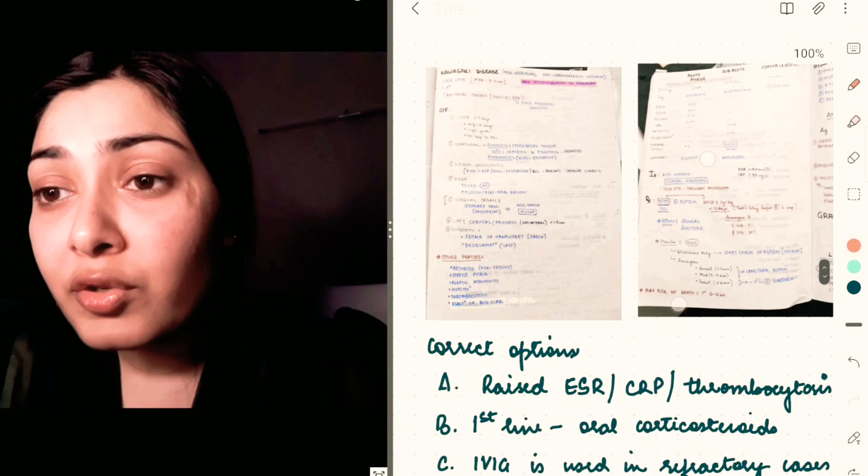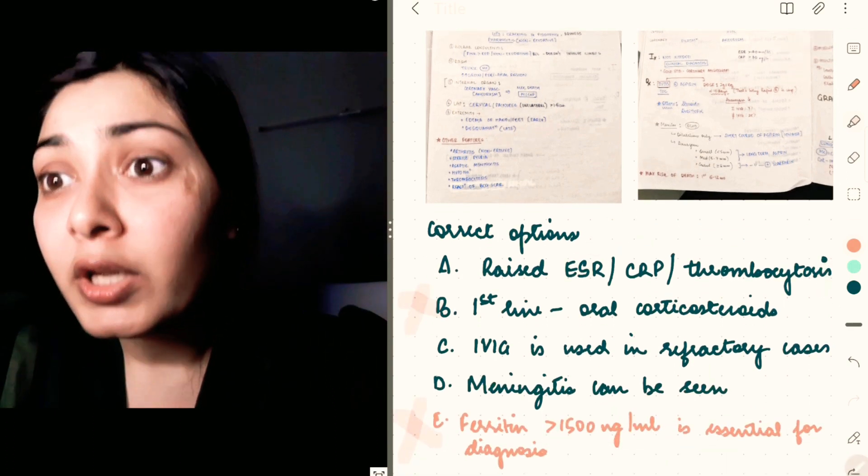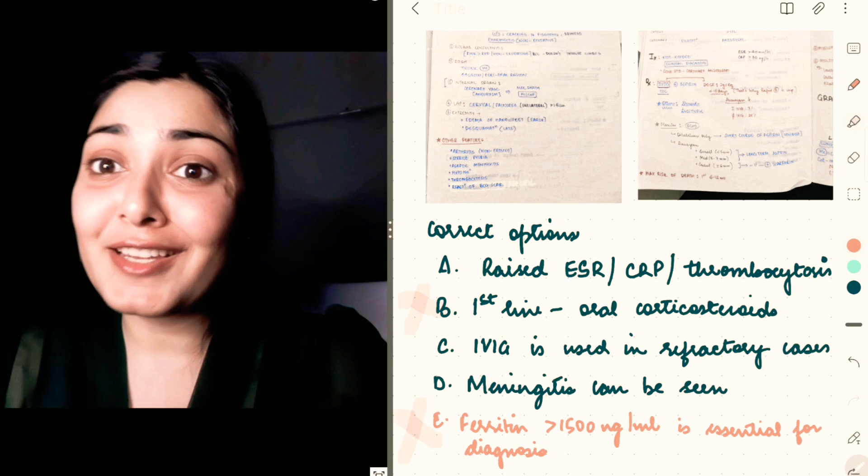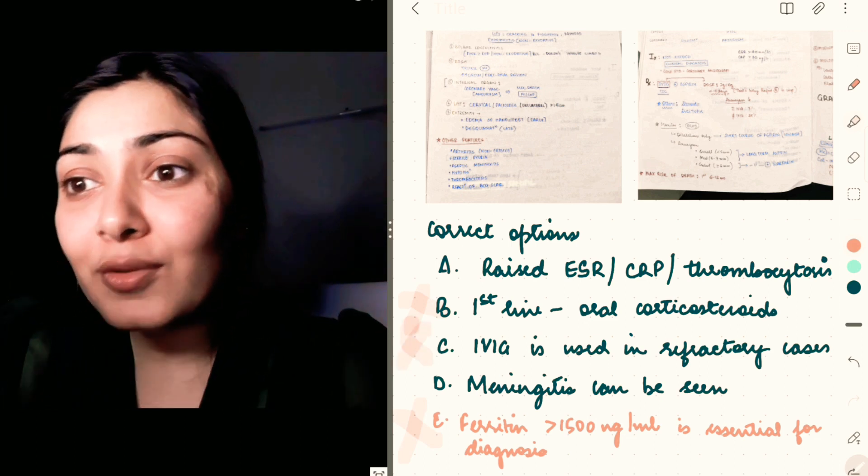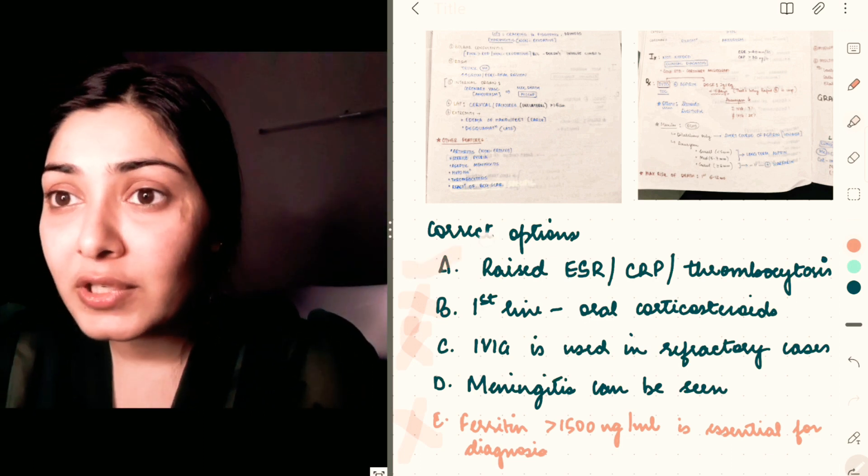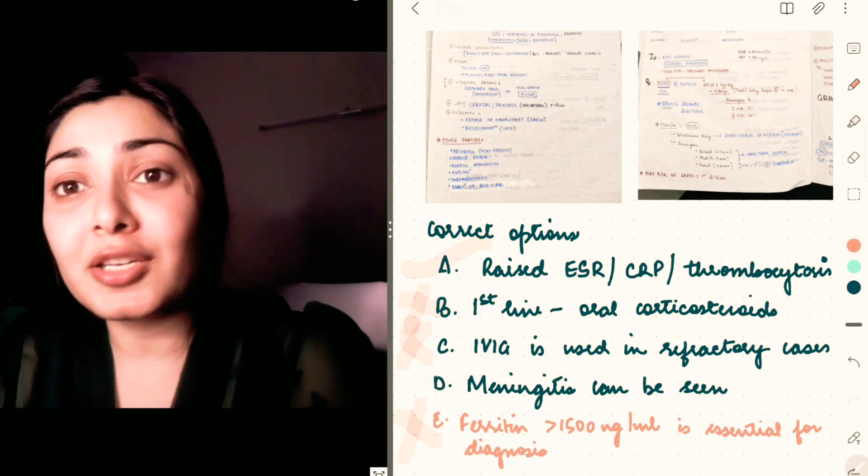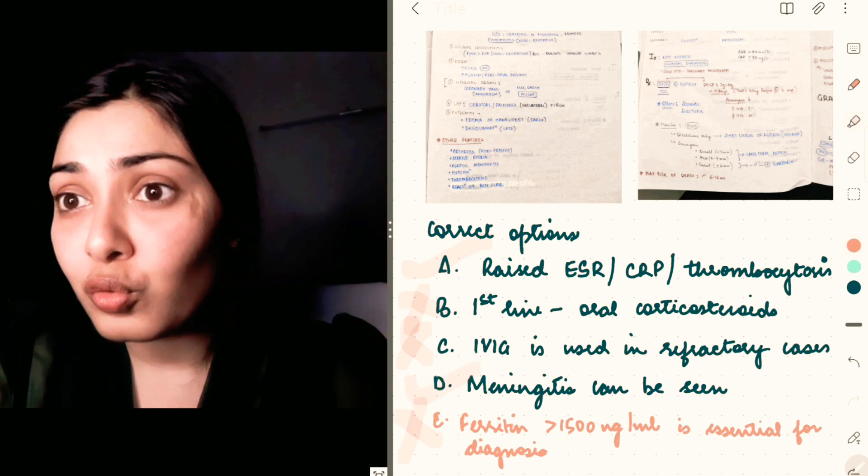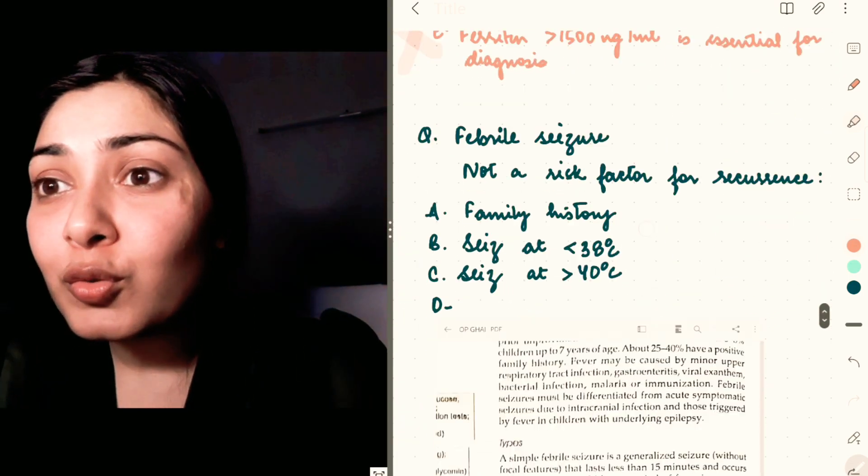So IV IG is the treatment of choice. Oral corticosteroids are not, and IV IG is used in all the cases—should be used in all the cases. It's not just used in refractory cases. Raised ESR, CRP, and thrombocytosis—it's seen. And meningitis can be seen—yes, aseptic meningitis can be seen in cases of Kawasaki disease, so it's true. So correct options are A and D in this case.